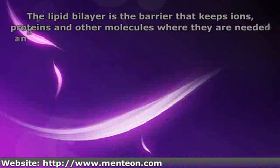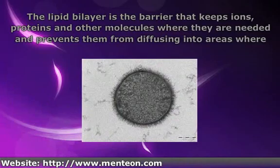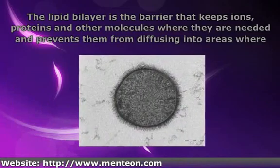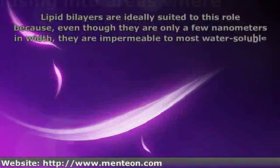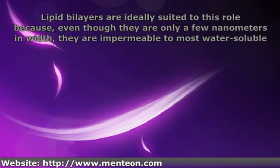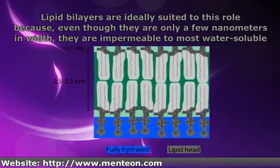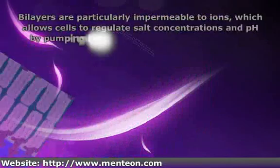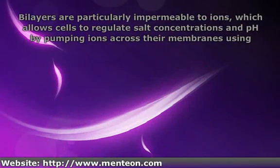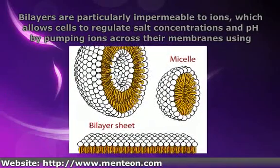The lipid bilayer is the barrier that keeps ions, proteins and other molecules where they are needed and prevents them from diffusing into areas where they should not be. Lipid bilayers are ideally suited to this role because, even though they are only a few nanometers in width, they are impermeable to most water-soluble, hydrophilic molecules. Bilayers are particularly impermeable to ions, which allows cells to regulate salt concentrations and pH by pumping ions across their membranes using proteins called ion pumps.